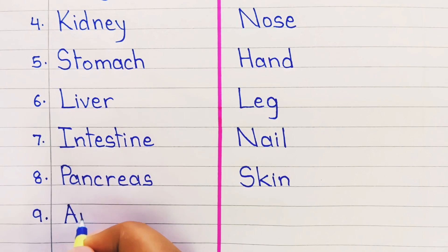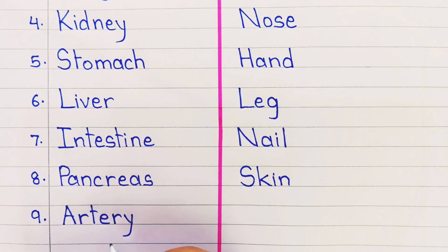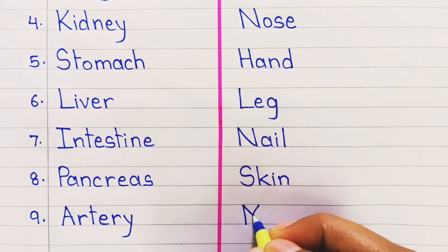9. Internal organ is artery. External organ is mouth.